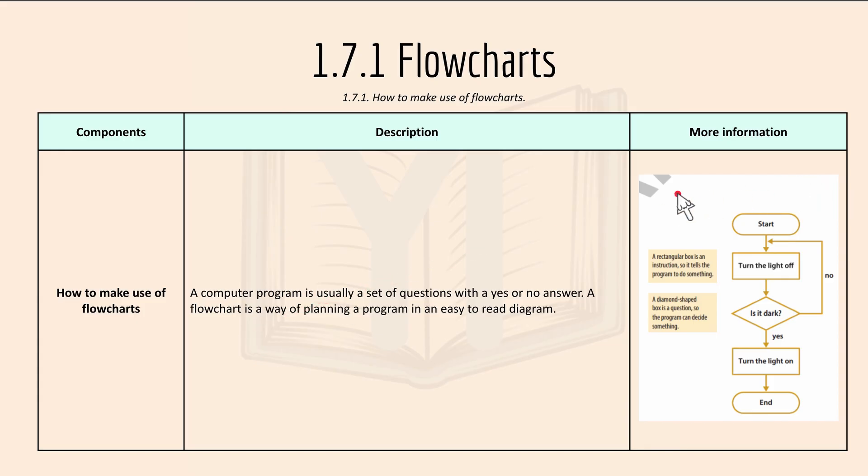So here we have a flowchart over here. A rectangular box is an instruction, so it tells the program to do something. And the diamond shaped box is a question so the program can decide something. So from the start it goes to turn the light off, which is a program to do something like an instruction.